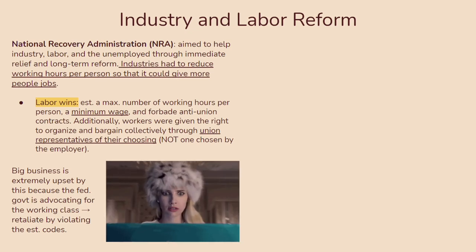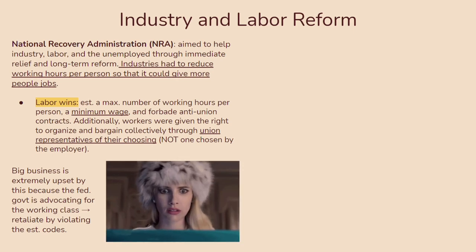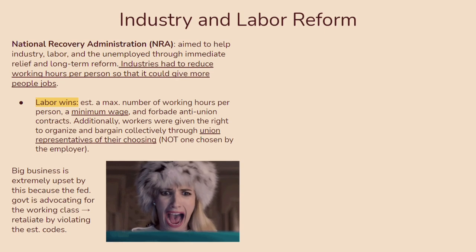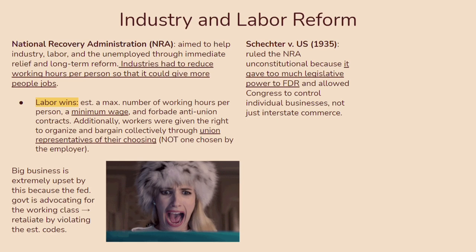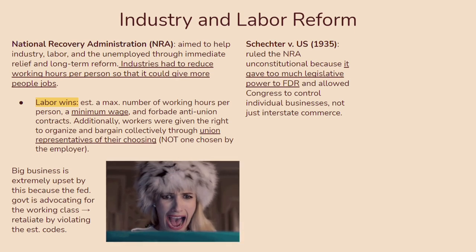Because of this, big business got extremely upset because the federal government was advocating for the working class, and they retaliated by establishing various working codes and regulations. This is really representative of the decades-long shift from solely helping big business to actually helping the people. Usually when there was a labor strike, the government would intervene on the employer's side — but now that was very slowly shifting towards helping the people. You should also know about the Supreme Court case Schechter v. U.S. in 1935, which found that the NRA was unconstitutional because it gave too much legislative power to FDR and allowed Congress to control individual businesses, not just interstate commerce.